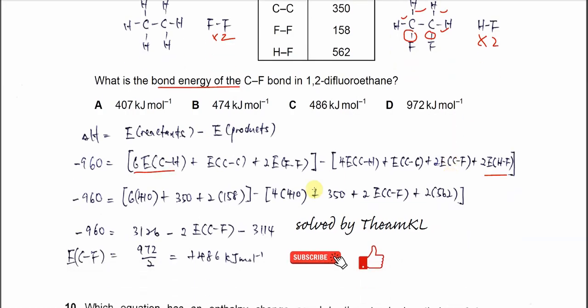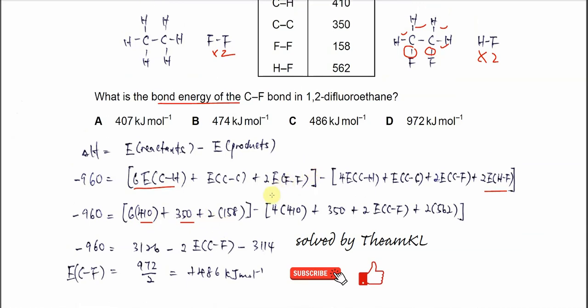So we have this equation. Now substitute all the values. Bond energy of C-H is 410, C-C is 350, fluorine is 158. And C-F is what you need to find. H-F is 562.